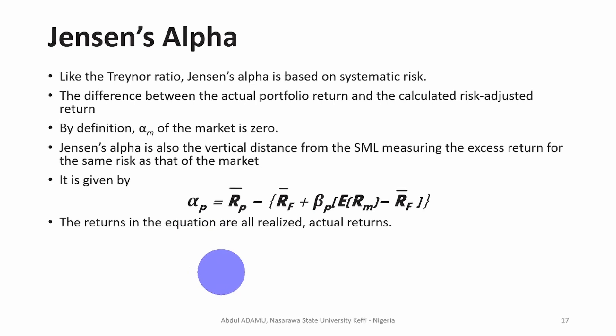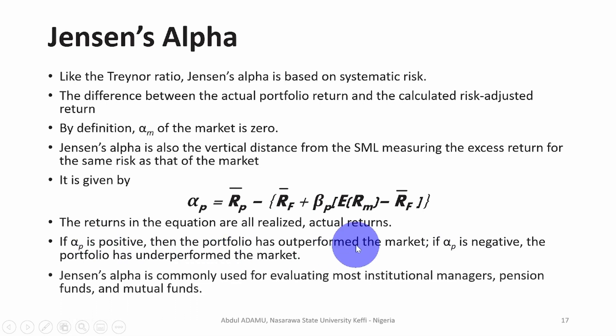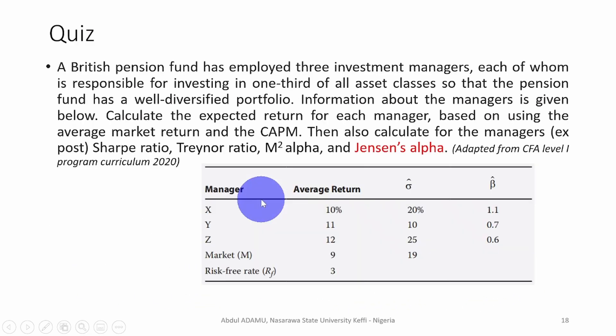So the returns in the equation are all realized, the actual return, because we are talking about performance in this case. If the alpha is positive, then the portfolio has outperformed the market. If it is negative, then it has underperformed. Jensen alpha is commonly used to evaluate most institutional managers, pension funds, and mutual funds.